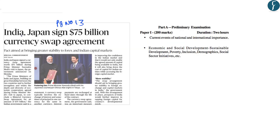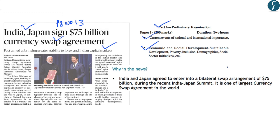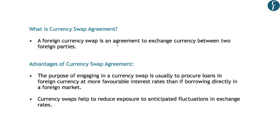Now let us move on to today's newspaper. This article on page number 13 is related to a currency swap agreement signed between India and Japan. It will form part of the preliminary examination syllabus under international relations or current events of national and international importance, and also under economic development of India. This is in news because India and Japan have agreed to enter into a bilateral currency swap agreement of $75 billion, which is one of the largest currency swap agreements in the world.